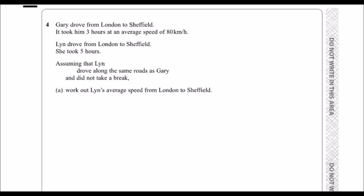This question says: Gary drove from London to Sheffield. It took him three hours at an average speed of 80 kilometres per hour. Lynn also drove from London to Sheffield and it took her five hours. Assuming that Lynn drove along the same roads as Gary and did not take a break, work out Lynn's average speed.